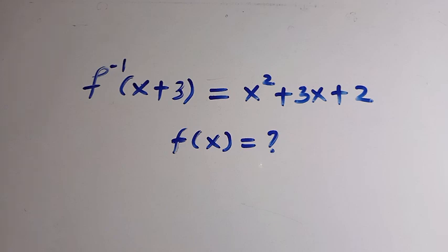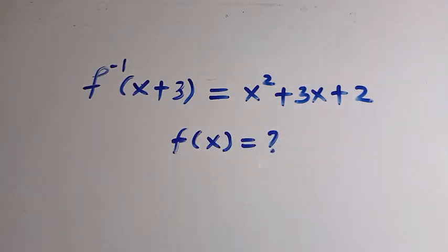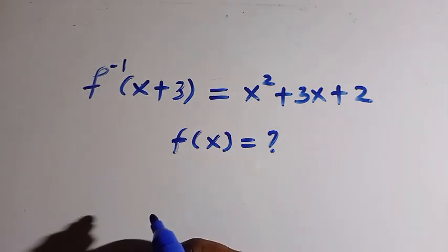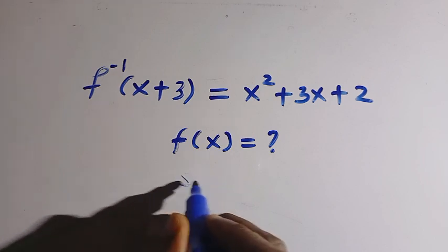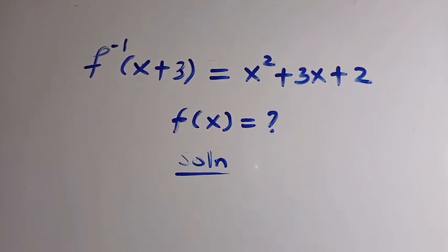There are three things we need to find here. First, we have to make sure that the right hand side, which is in the form of a quadratic equation, we have to write it in the form of factors having x plus 3 as one of the two factors. After that, we are going to change the inverse to the ordinary form f of x. So we consider the solution from the left hand side, which is x squared plus 3x plus 2. Let's try and factorize that.